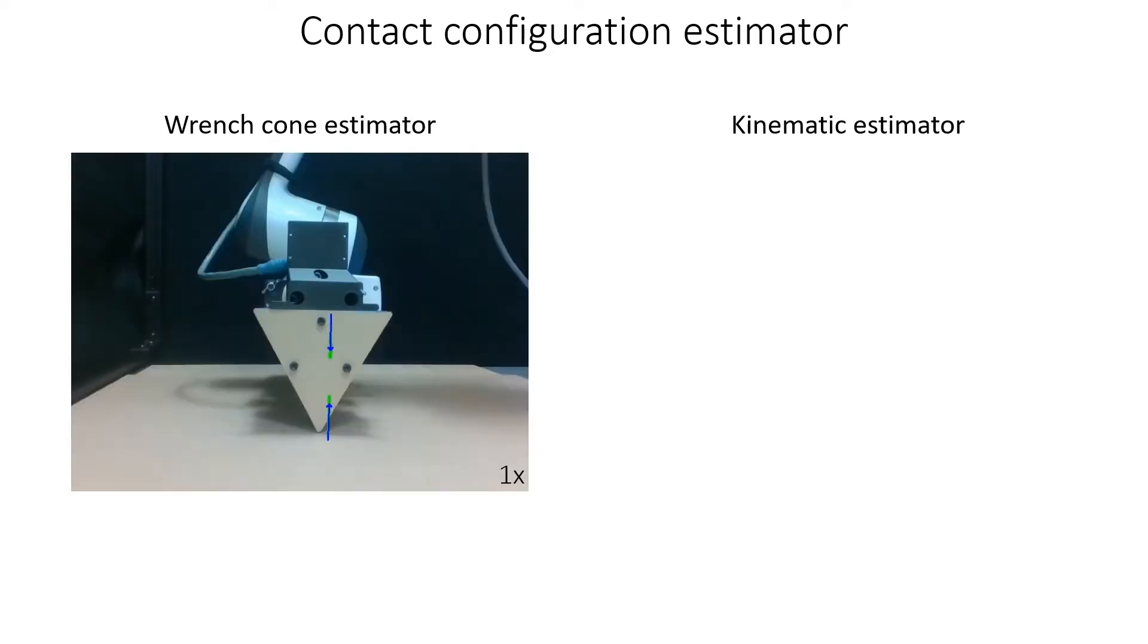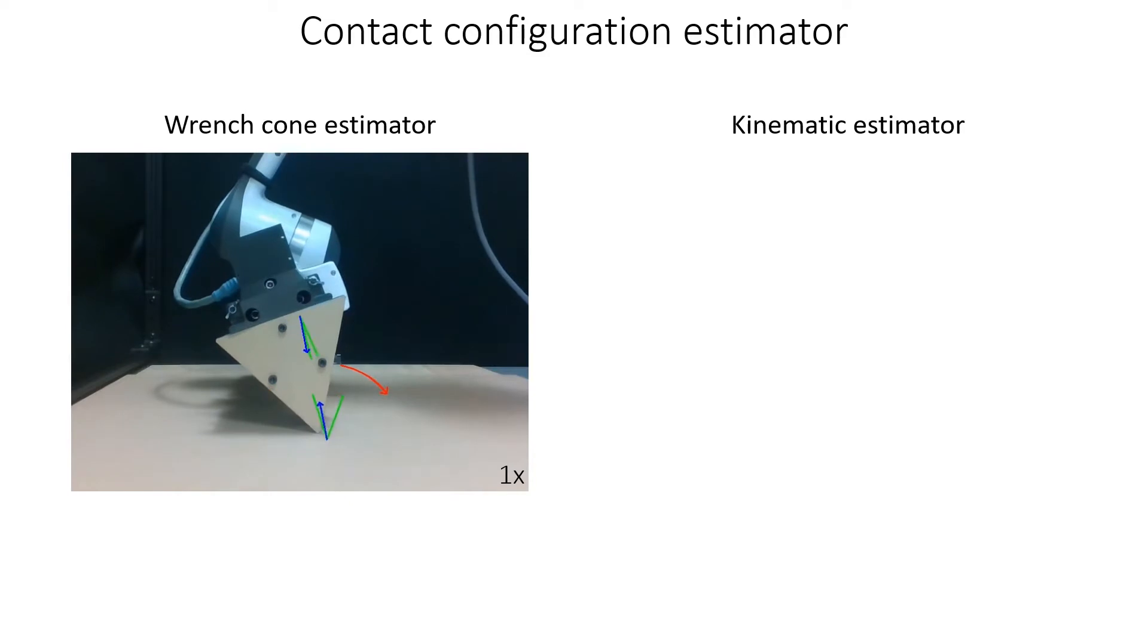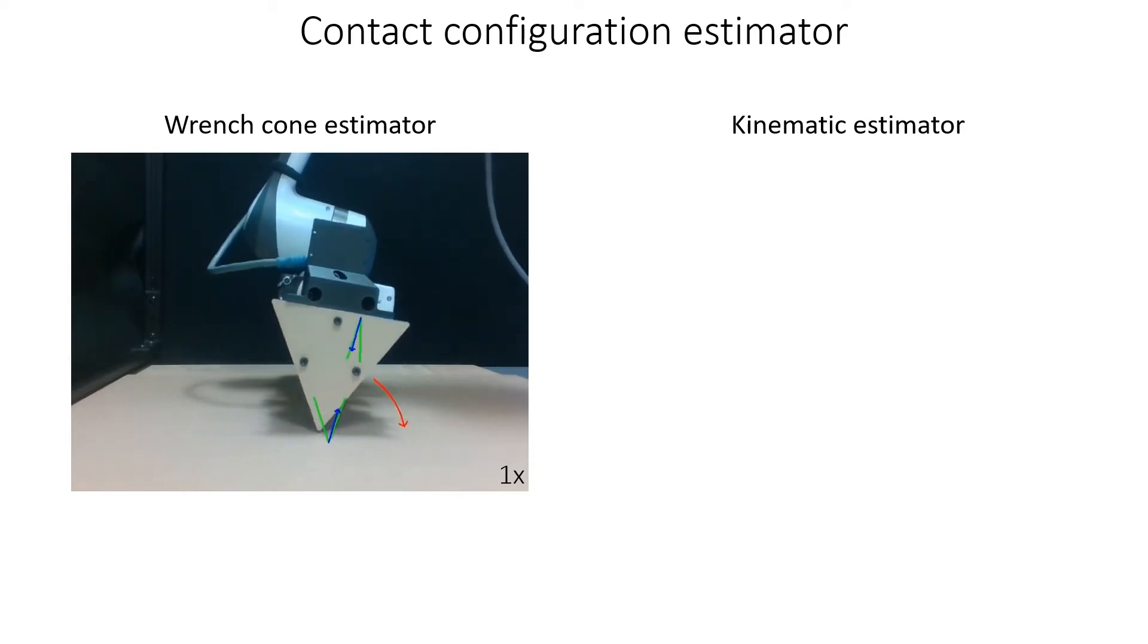The contact configuration estimator also consists of two components that run in parallel, the wrench cone estimator and the kinematic estimator. The wrench cone estimator synthesizes the time history of force measurements, shown in blue, into estimates of the ground and hand friction cones, shown in green.